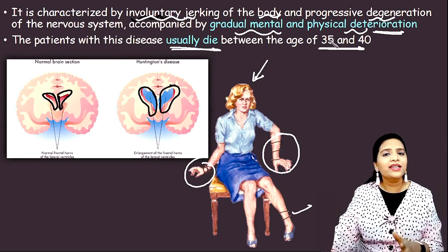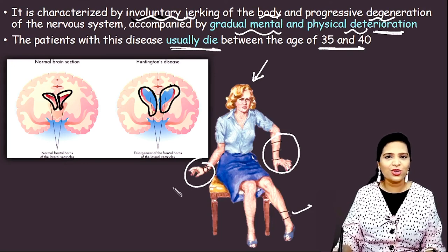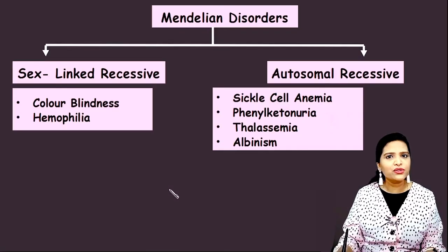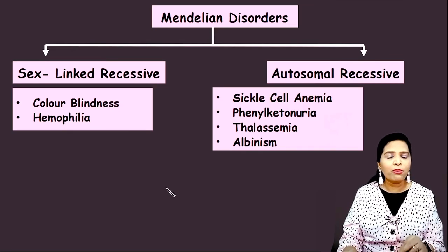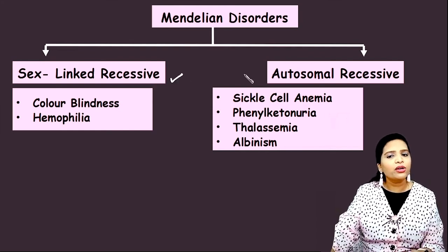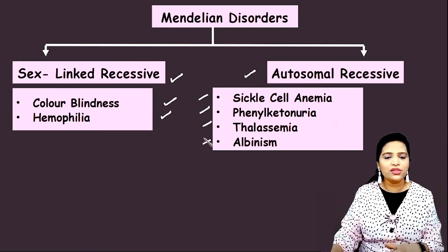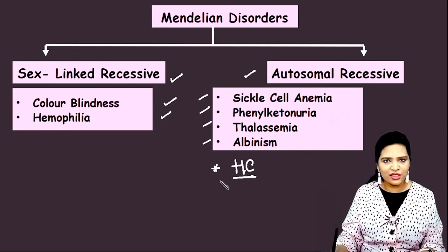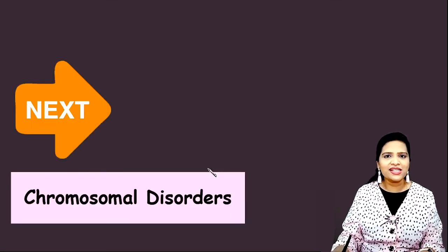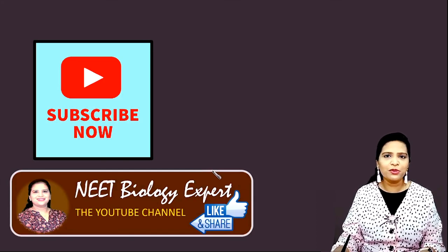To recap: a defect in a single gene is called a Mendelian disorder. Depending on where the defective gene is present, they are classified as sex-linked or autosomal disorders. Colorblindness and hemophilia are examples of sex-linked recessive disorders. Sickle cell anemia, phenylketonuria, thalassemia, and albinism are examples of autosomal recessive disorders. Huntington's chorea is an autosomal dominant disorder. Our next lecture will be about chromosomal disorders. If you liked this lesson, like, comment, share, and subscribe to NEET Biology Expert. Thank you.